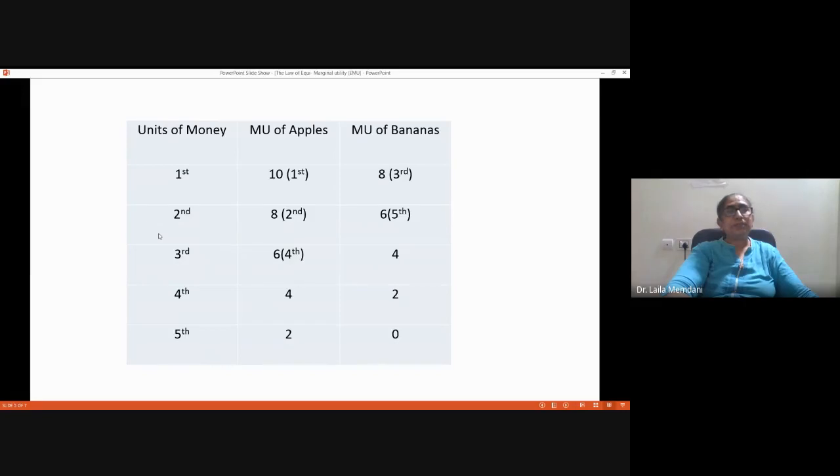Now let us assume that our individual has 5 rupees. Since apple is giving higher utility, he will consume the first apple, so the first rupee he spends on apple gets 10 utils of utility. For the second rupee, he can either spend on bananas or on apple. If he wants variety, he will go for banana. If he wants apple, he can go for apple.